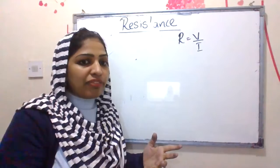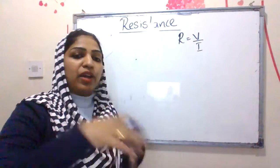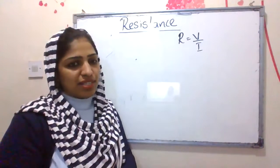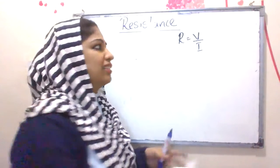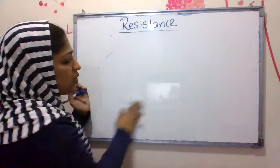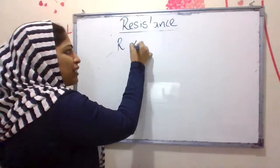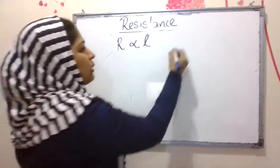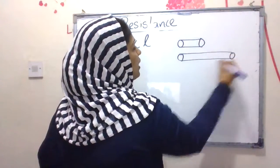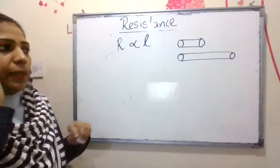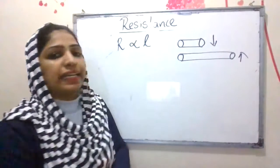But what are the factors on which R depends? Where are the factors on which resistance of a metallic conductor depends? Resistance of a conductor depends on the length of the conductor. Resistance is directly proportional to length — longer wires have more resistance, and shorter wires have less resistance.